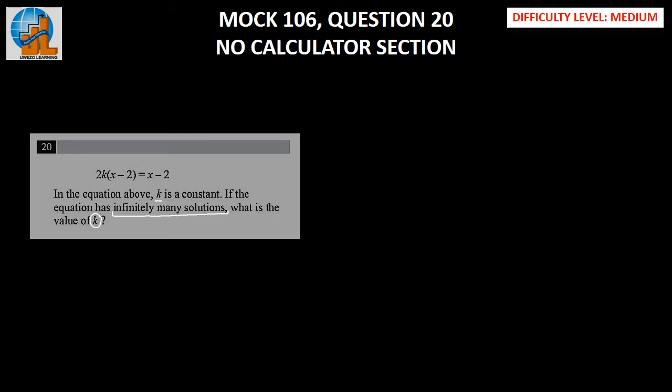Let us start with writing our equation here, which is 2k(x-2) = x-2. Let us simplify our left hand side, which implies 2kx - 4k = x - 2.